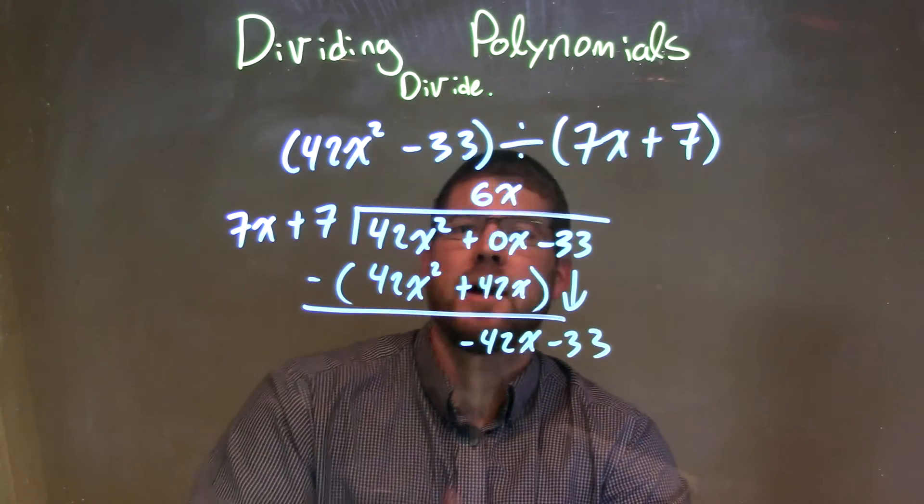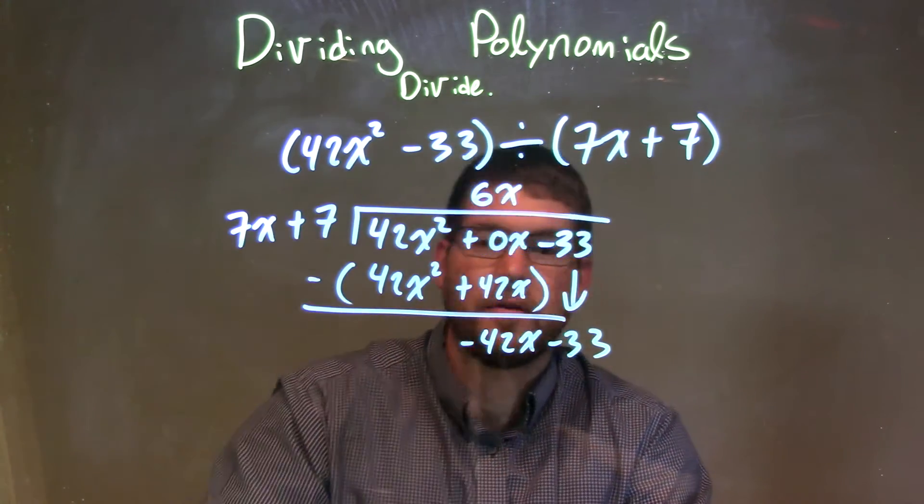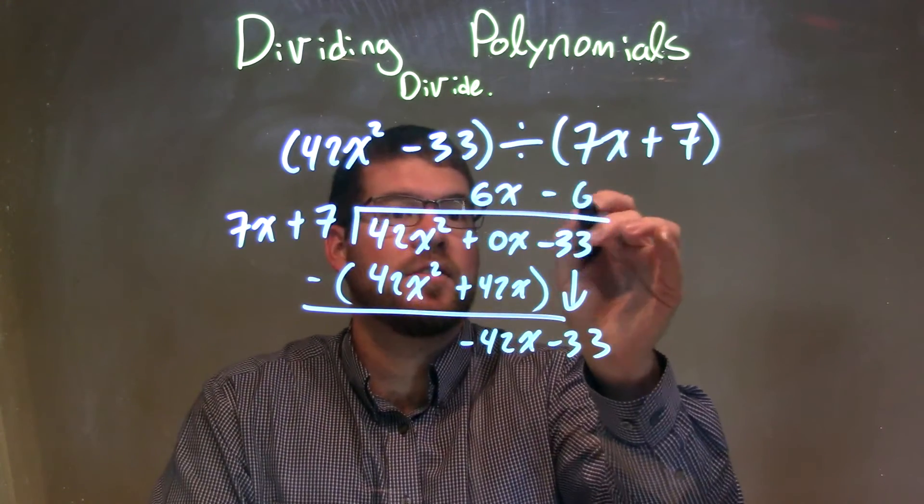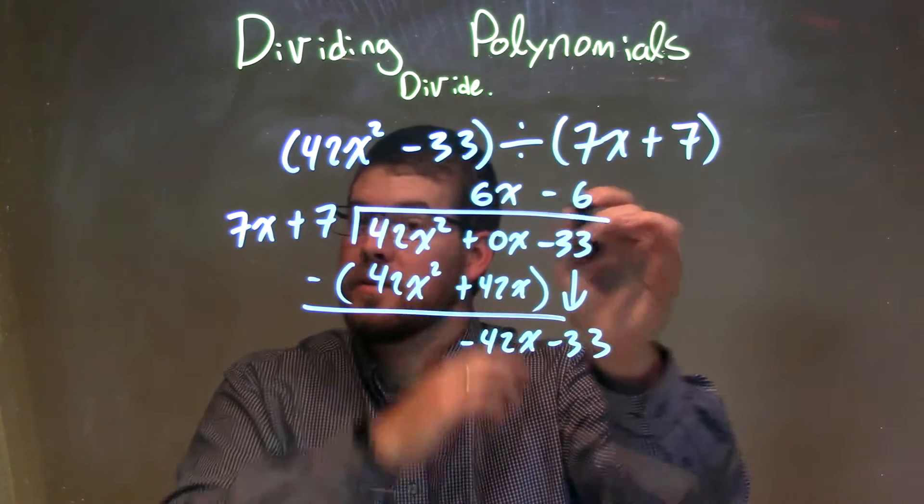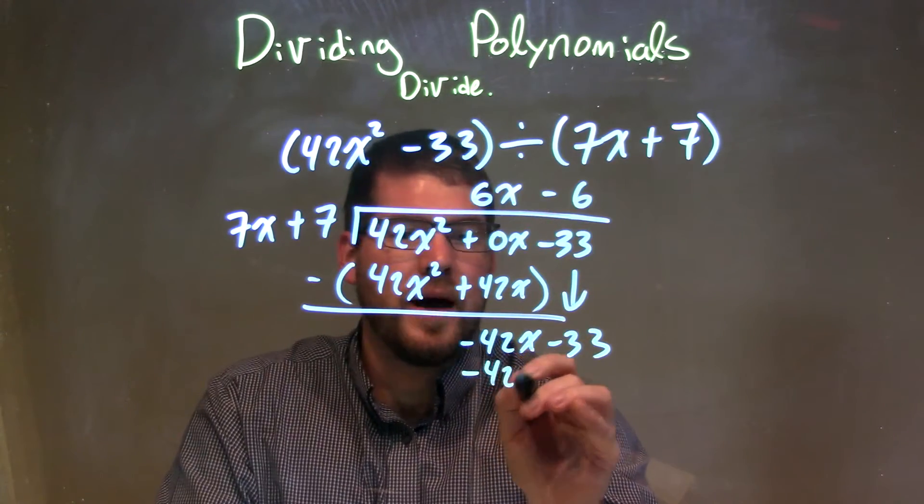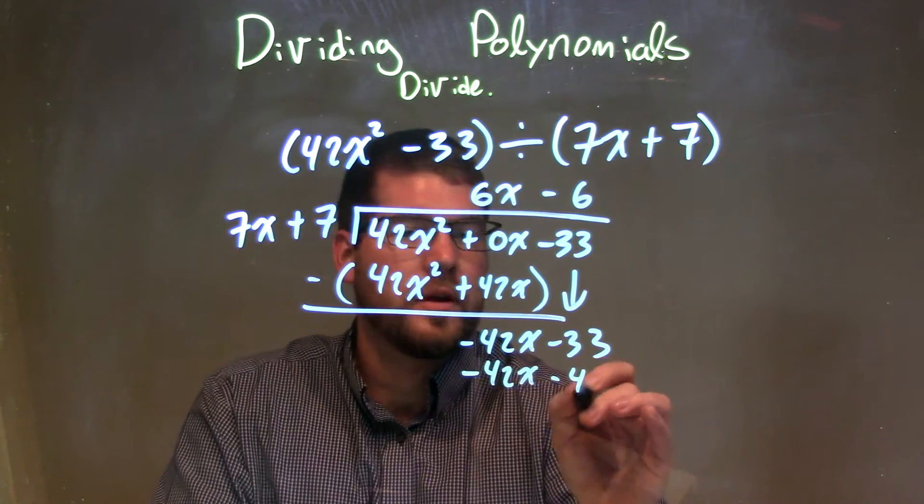So now I ask the question, what times 7x gives me a negative 42x? And that's just a minus 6. So minus 6 times 7x is a negative 42x. Minus 6 times 7 is just a minus 42.